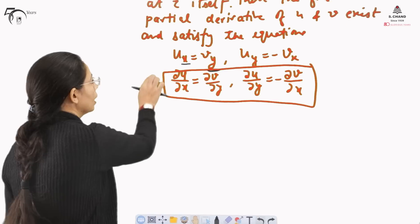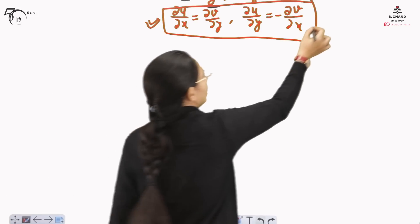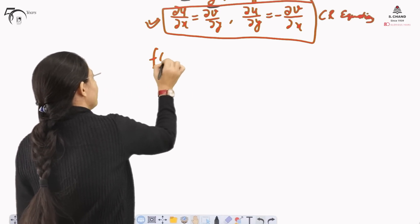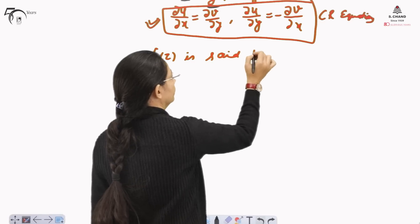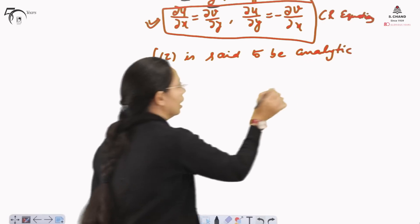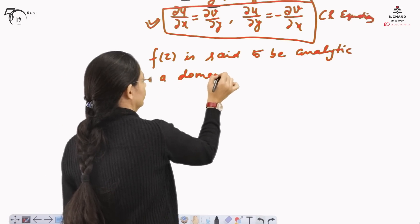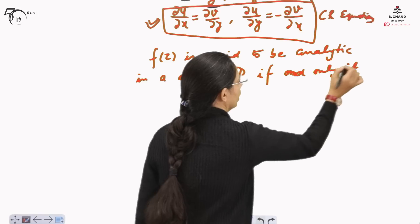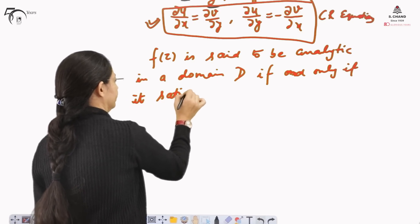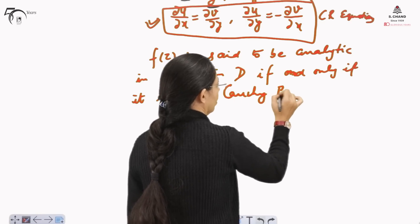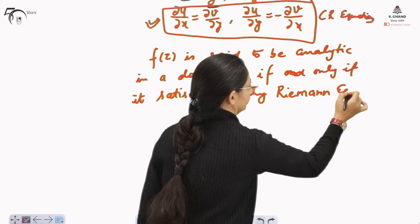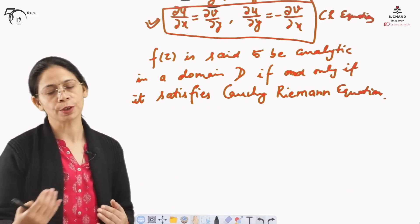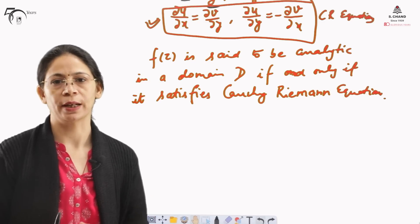As stated at the start, there is a relation between analyticity and the CR equations. A function f(z) is said to be analytic in a domain D if and only if it satisfies the Cauchy-Riemann equations. That is, if the function satisfies the CR equations we say it is analytic, and if the function is analytic it will satisfy the CR equations. We will make this clearer by taking an example.